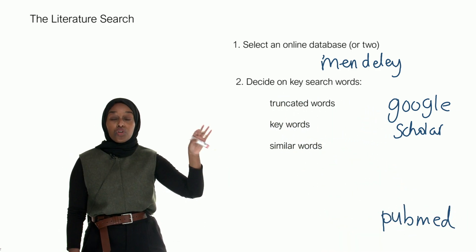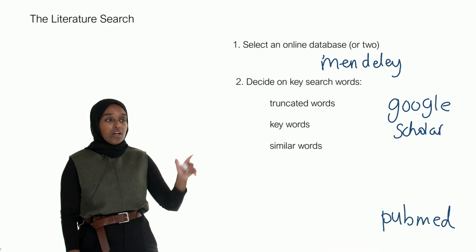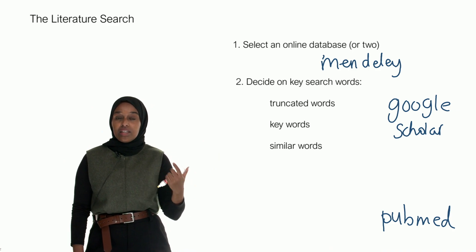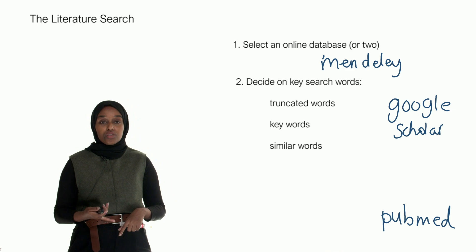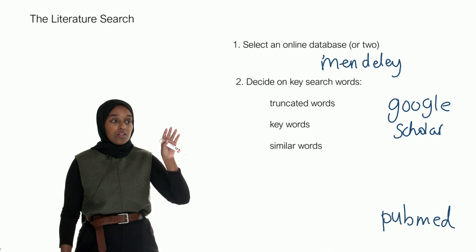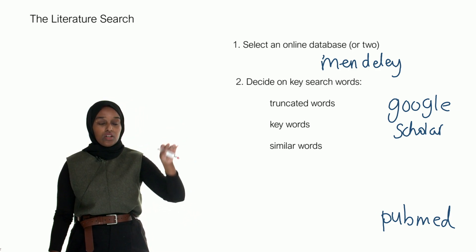And those should be your go-to online databases for finding really any literature out there. Google Scholar is really good for finding different sources - for example, a book article, a book chapter. PubMed doesn't really have that kind of stuff on it.